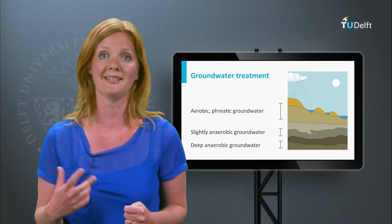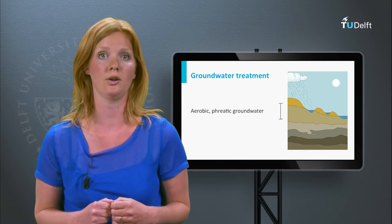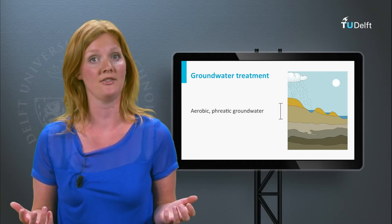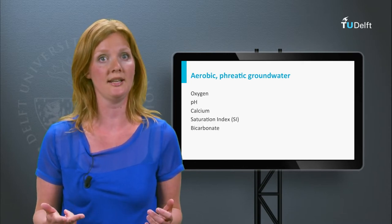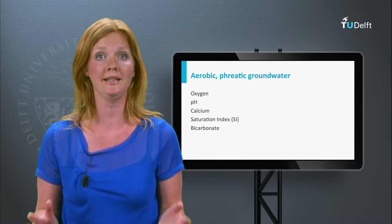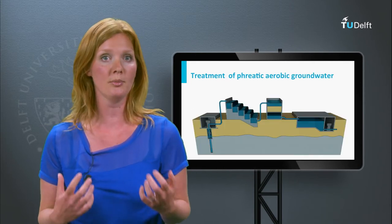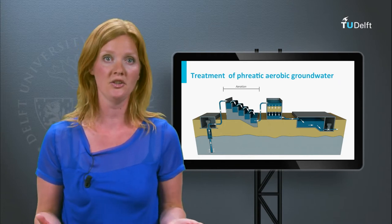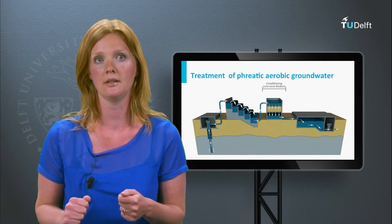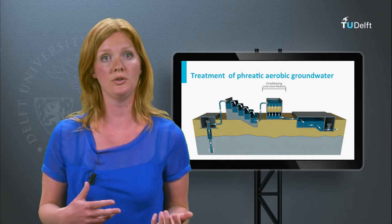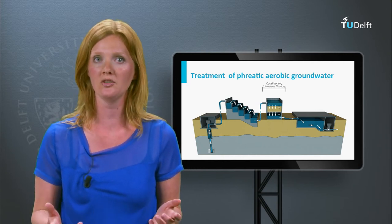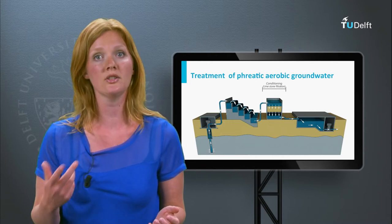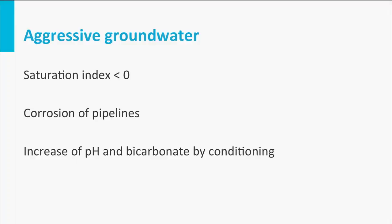Each groundwater type has its own typical treatment scheme. Aerobic groundwater has an open groundwater table, is therefore connected to the atmosphere, and thus contains oxygen. For aerobic groundwater, only the parameters pH, calcium, saturation index, and bicarbonate have to be taken into account — the other parameters generally comply with legal requirements. The treatment scheme for aerobic groundwater is generally very simple and consists of aeration with optional subsequent conditioning or softening. The aeration phase will increase the oxygen concentration and at the same time reduce the carbon dioxide concentration. Conditioning is desired when aerobic groundwater is abstracted from sandy soils where no calcium is available; the water is then called soft or aggressive water.